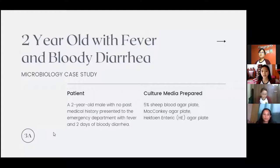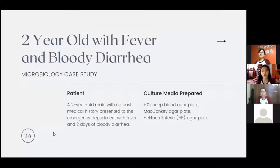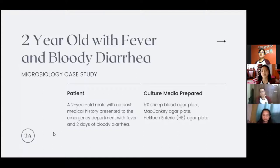The culture media prepared are the 5% sheep blood agar plate, MacConkey agar plate, and Hektoen enteric agar plate. The 5% sheep blood agar plate is a non-selective isolation media with trypticase soy agar base and 5% defibrinated sheep red blood cells. The MacConkey agar plate is a differential media used to isolate gram-negative organisms. It contains lactose, bile salt, neutral red indicator, and crystal violet.